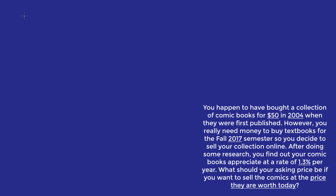It can be tempting to assume that just because the question is asking us to calculate an unknown value in 2017, which is the current year in the question, that we're trying to find the present value. But that would be an incorrect assumption. What the question is really asking us to do is forecast the value forward from 2004, or compound it forward from 2004. So we're really looking for the future value, which is given by the expression: present value times (1 plus the rate) raised to n.